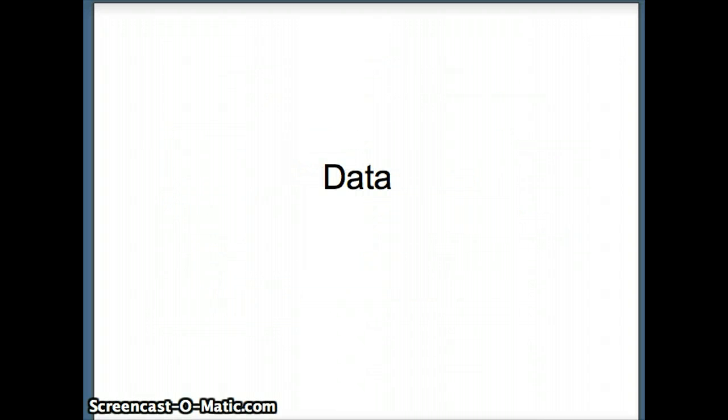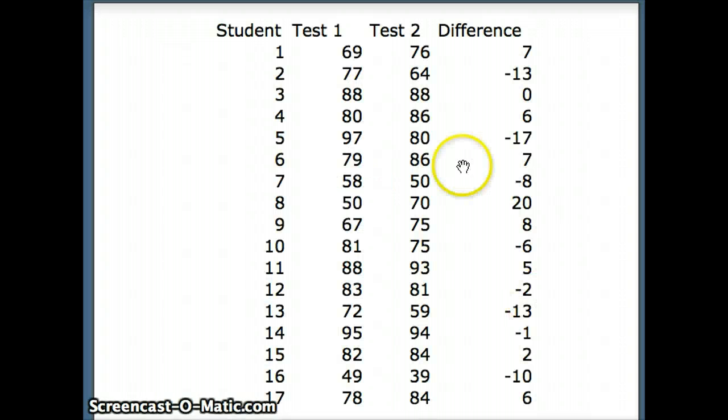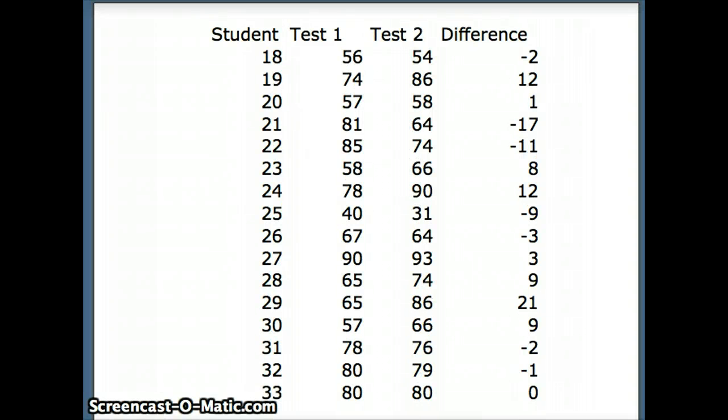So here's some data that we have. We have 33 randomly selected mathematics students. We have their scores on test 1 and their scores on test 2, as well as the differences. You'll notice test 1 is 69, test 2 is 76, for a difference of negative 13, it went down. So if we're going to ask Minitab to do this for us, we would say let C3 equal C2 minus C1. 76 minus 69 is 7, 64 minus 77 is negative 13, etc. And here's a few more data points. So you'll notice you have a total of 33 elements in our data set that will be important for us as we move forward.